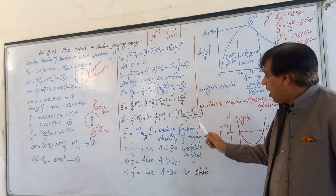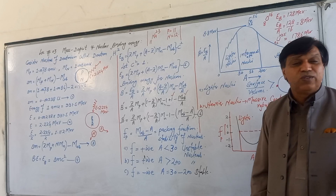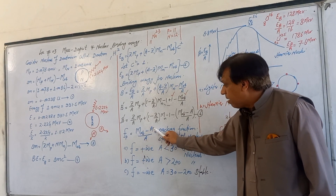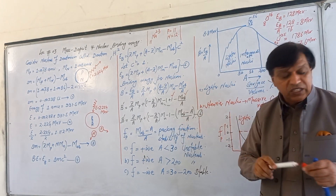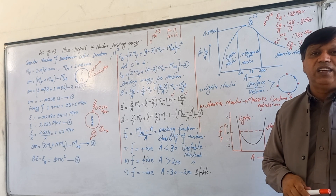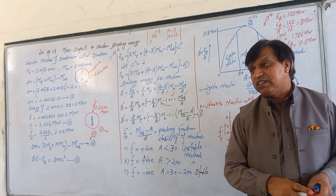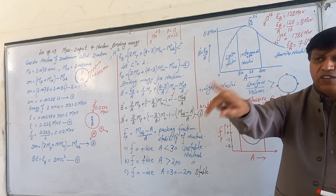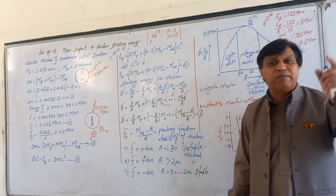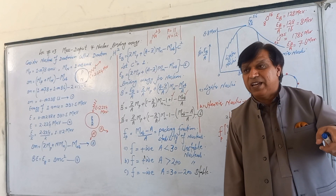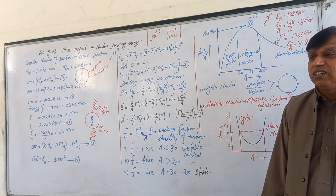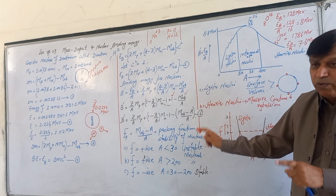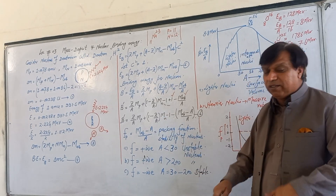In nuclear physics, the term (observed mass − A) / A is called the nuclear packing fraction, denoted f_p. So: f_p = (observed mass − A) / A. This term tells us the stability of the nucleus — which nuclei are stable and which are unstable. All of nuclear physics revolves around this concept, as nuclear stability determines the stability of elements and even the stability of the planets on which they are found.